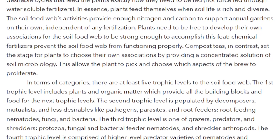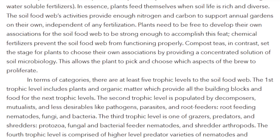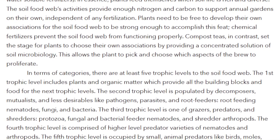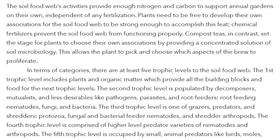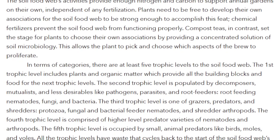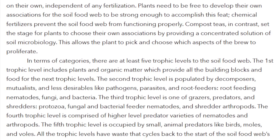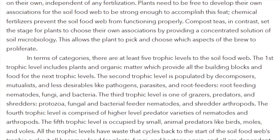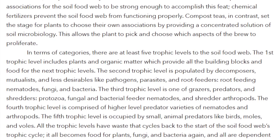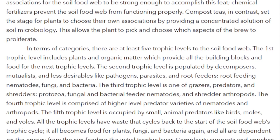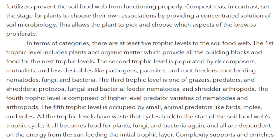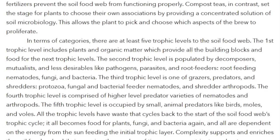In terms of categories, there are at least five trophic levels to the soil food web. The first trophic level includes plants and organic matter, which provide all the building blocks and food for the next trophic levels. The second trophic level is populated by decomposers, mutualists, and less desirables like pathogens, parasites, and root feeders — root-feeding nematodes, fungi, and bacteria. The third trophic level is one of grazers, predators, and shredders — protozoa, fungal and bacterial feeder nematodes, and shredder arthropods.